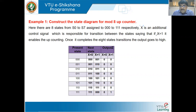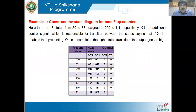If X is equal to one, it enables the up counting. Once it completes the eight state transitions, the output goes high. That is the meaning of X as the control signal. The output variable we use is Z, and once the eight count is done, output Z becomes one.